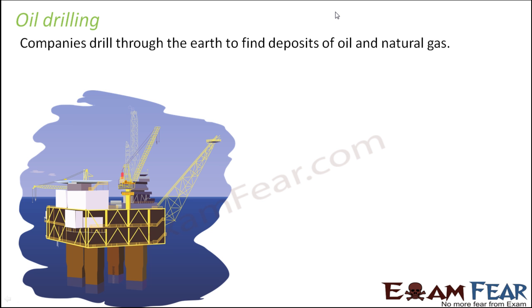Before we learn about the separation process, we first have to take the oil out from deep inside the earth. Just like in the case of coal we do coal mining, in the case of petroleum we do oil drilling. Companies drill through the earth to find deposits of oil and natural gas. They set up large apparatus in the oceans to find whether oil is present. Wherever there are large oil deposits, companies establish their equipment and fetch the oil from deep underground. Since oil is a liquid, it can be fetched directly using equipment, so tunnels and sending people inside are not much required.